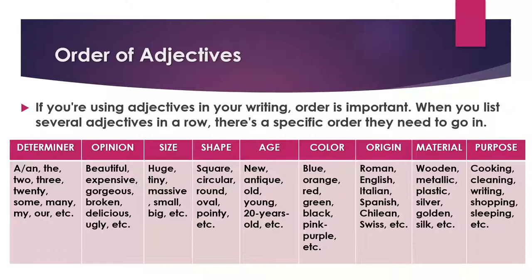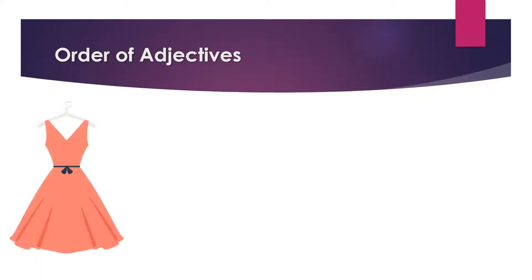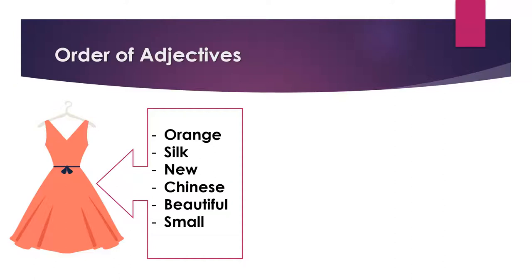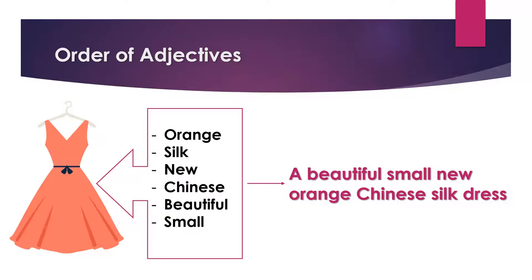Now, let's see this order of adjectives in a sentence. For example, we have a dress. We can say that this dress is orange, it's made of silk, it's new, it's Chinese, it's beautiful, and it's small. So if we want to use all those adjectives in one sentence, we must use the correct order: a beautiful, small, new, orange, Chinese, silk dress. That will be the correct order of those adjectives in a sentence.